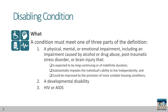Disability is an extremely important data element for determining and prioritizing the most vulnerable clients in our community. A client with a health condition meeting one of three parts is considered to have a disabling condition. Part 1: a physical, mental, or emotional impairment, including an impairment caused by alcohol or drug abuse, post-traumatic stress disorder, or brain injury.